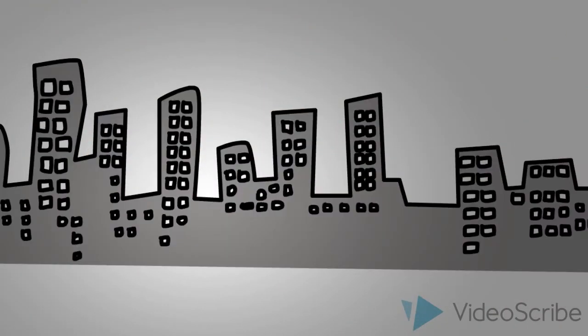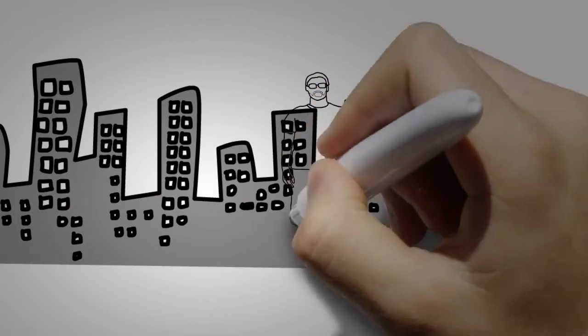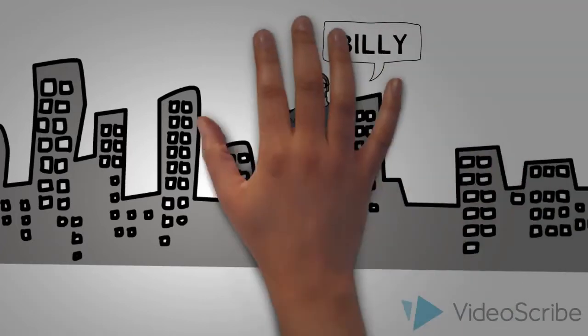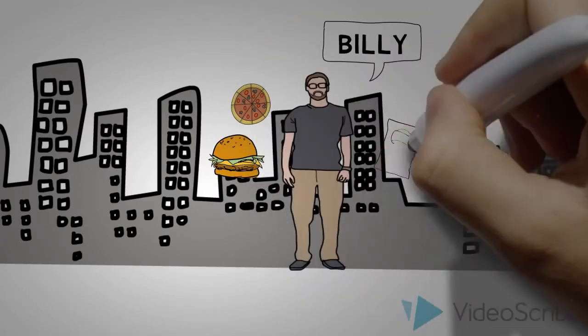One of the best ways to understand the model is to apply it to an example of an individual progressing through the stages. This is Billy. He often eats fast food to save time in his busy schedule.